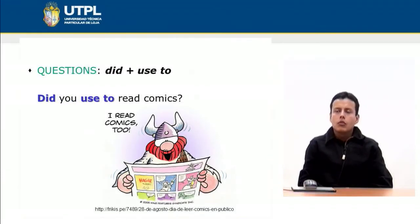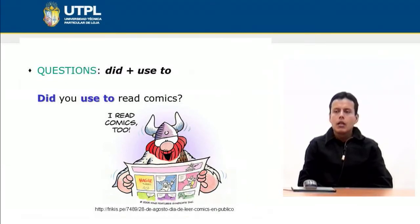For questions, I use the auxiliary 'did' — 'did' plus 'used to.' For example: 'Did you used to read comics?' — solías leer comics. You can see that the structure is similar to the structure of a simple past question, using the verb 'used to.'